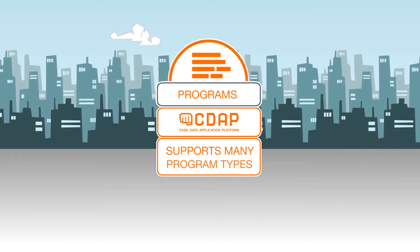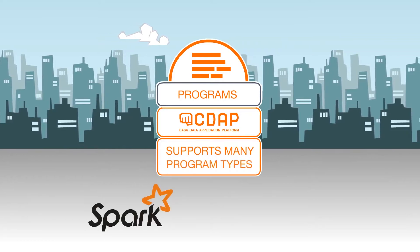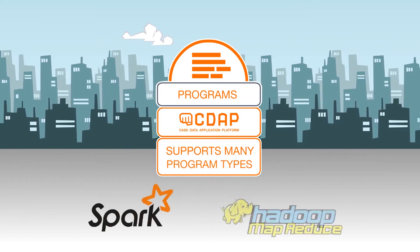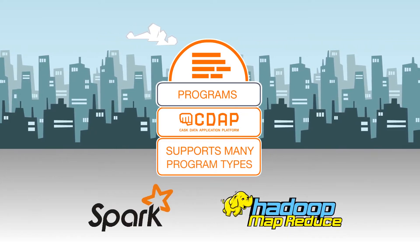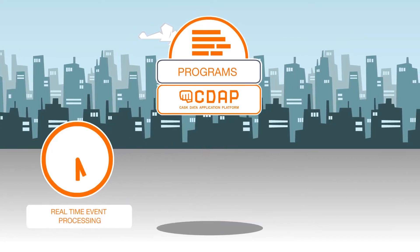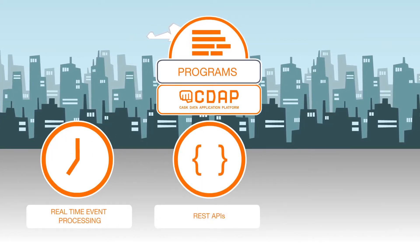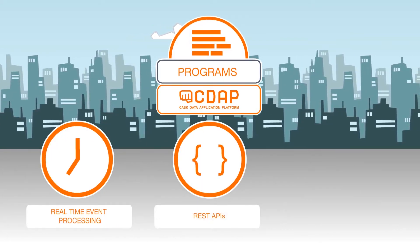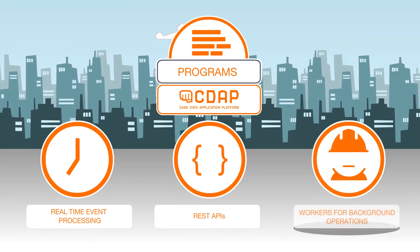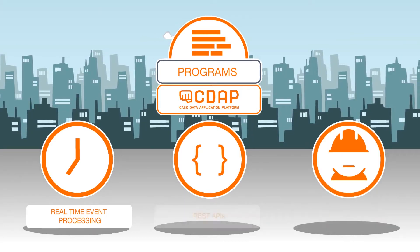CDAP supports many program types, including existing Spark and MapReduce jobs, flows for exactly-once real-time event processing, services for REST APIs, and workers for background operations.